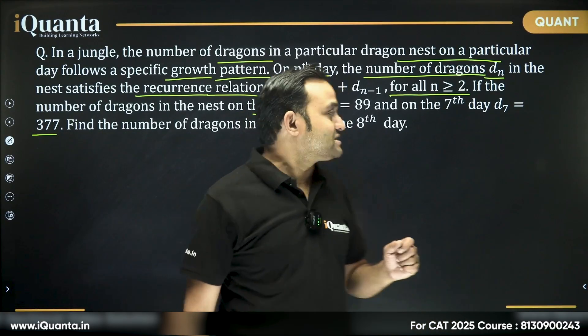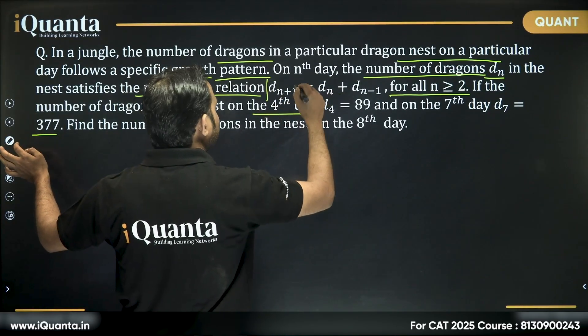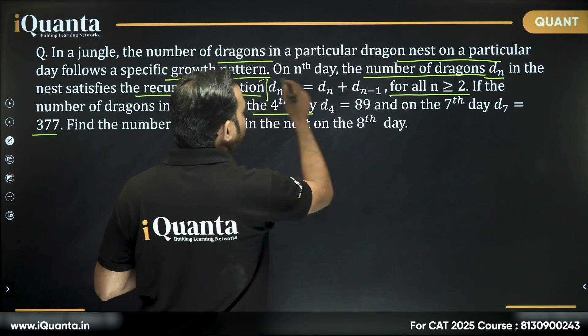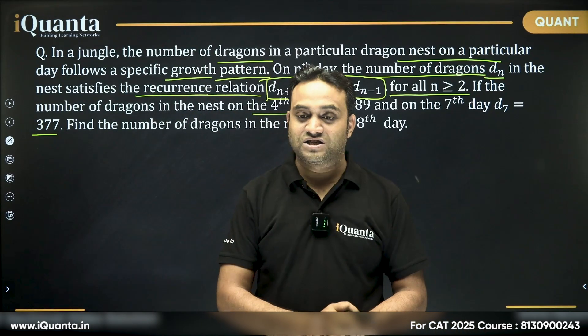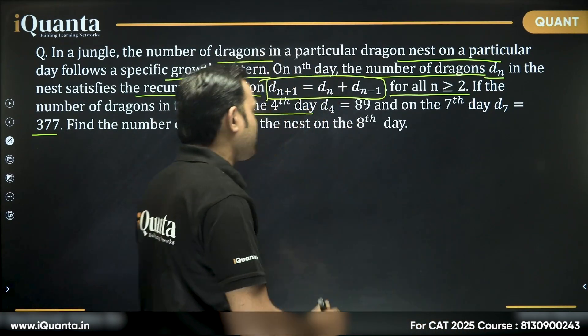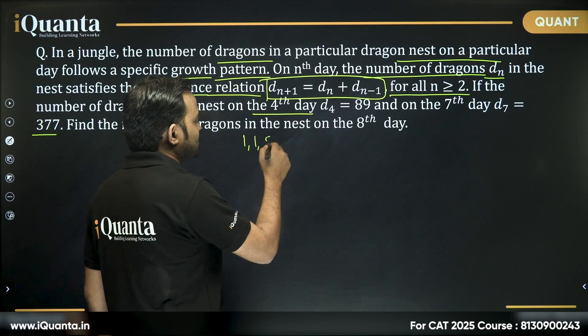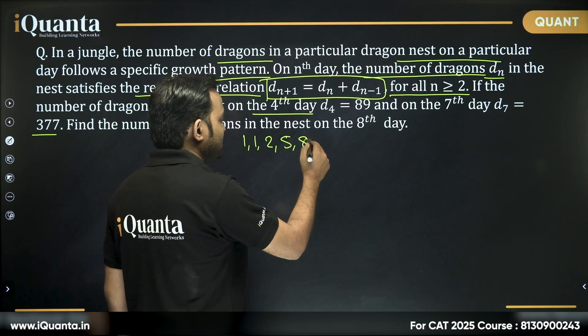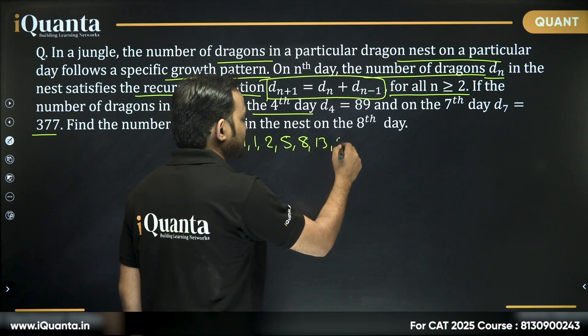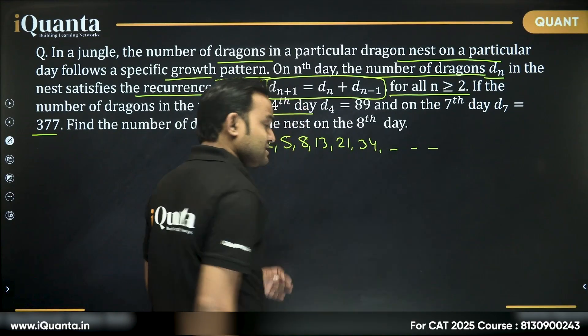So, this sequence, this relation is a perfect example of Fibonacci sequence. I hope you are aware of this Fibonacci sequence. Our Fibonacci sequence is starting with one and one, two ones, then the third term will become two, fourth term will become five, then eight, then thirteen, then 21, then 34, and so on. This is the Fibonacci sequence.